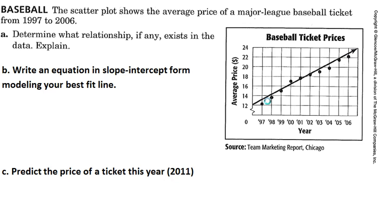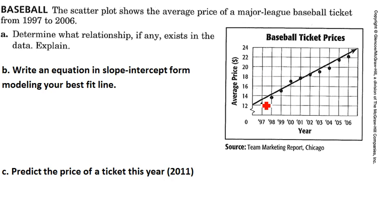So let's start by looking at the points. This is a scatterplot showing the year and then showing how the average price of baseball tickets changed over those years. Now you'll notice the data isn't perfect — it usually isn't for a real life scatterplot — but we understand that we can draw a best fit line that more or less fits our data.